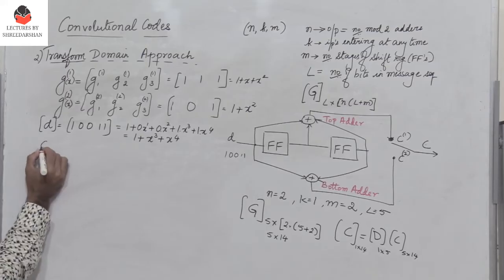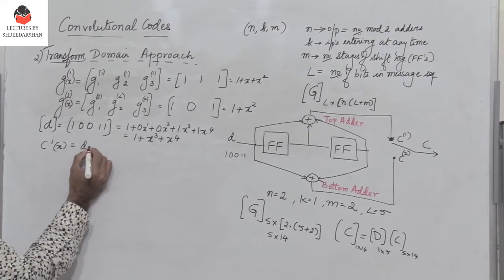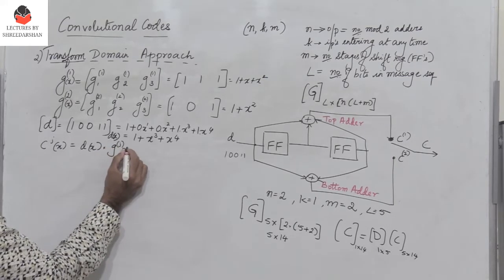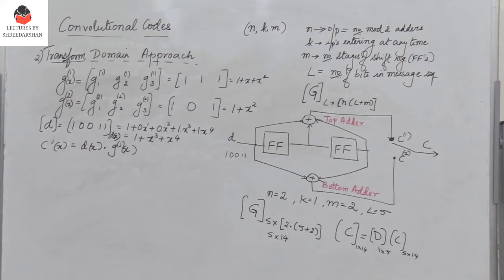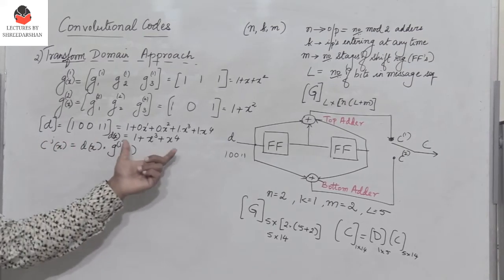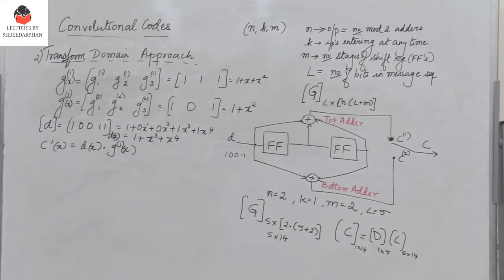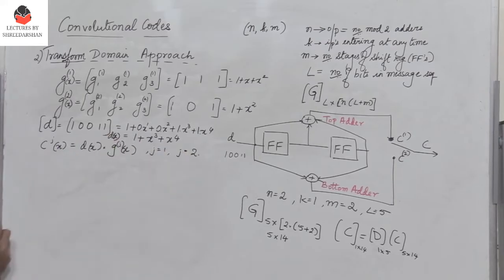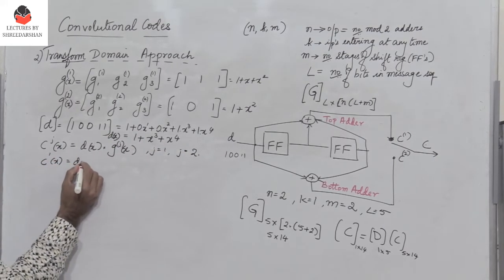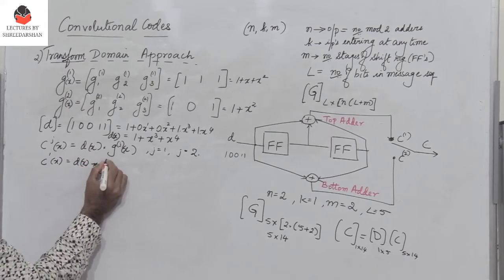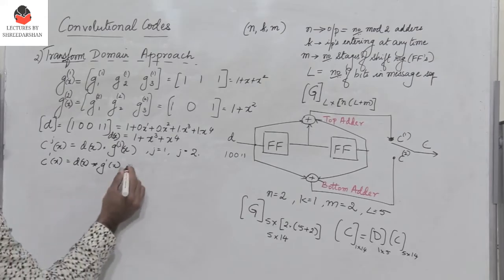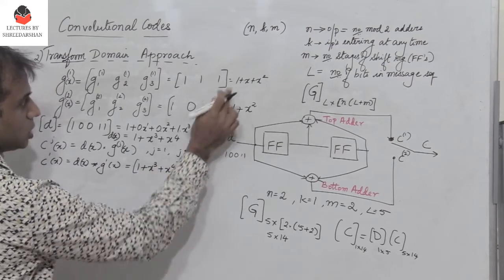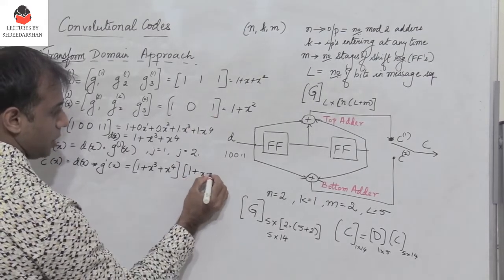Now what is the output? We define Cj(x) = D(x) · Gj(x), where D(x) is the message polynomial. So C1(x) is obtained by multiplying D(x) with G1(x), for the top adder where j=1, and C2(x) uses G2(x) for the bottom adder where j=2. So C1(x) = D(x) · G1(x). I multiply the two polynomials: (1 + x³ + x⁴) · (1 + x + x²).